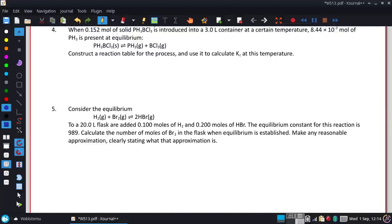Consider the equilibrium with hydrogen and bromine making hydrogen bromide. To a 20-liter flask, we're going to add 0.1 moles of H2 and 0.2 moles of HBr. The equilibrium constant for that reaction is 989, and we want to calculate the number of moles of bromine in the flask when equilibrium is established.